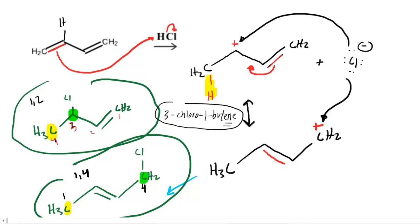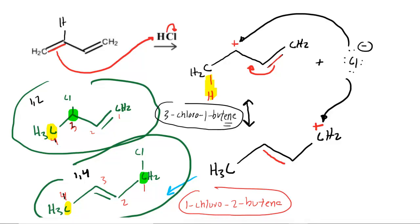In the other case, we would number the chain in the same way. So this would be carbon one, this would be two, this would be three, and this would be four. And then if we were to name this, it looks like we have 1-chloro, and then 2-butene. This time the double bond begins at carbon number two. So these are the two names that we're going to be keeping in mind. Let's bring them up and compare them to the products.